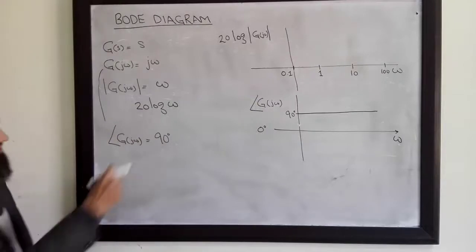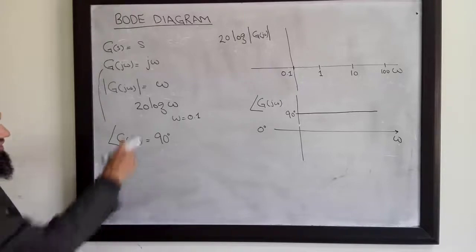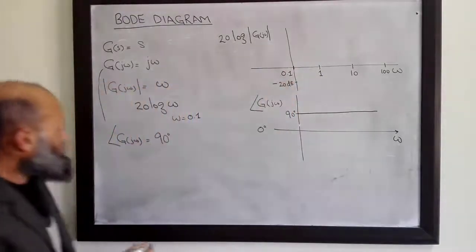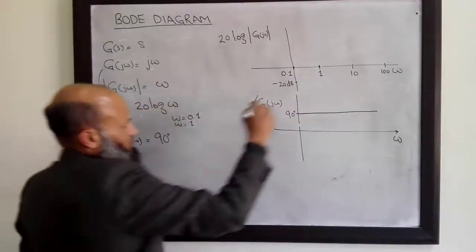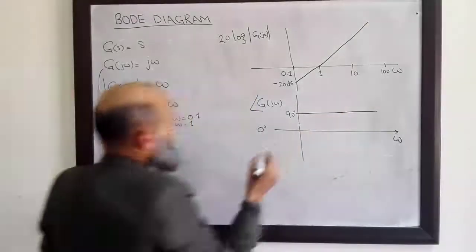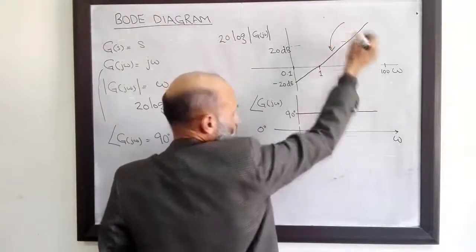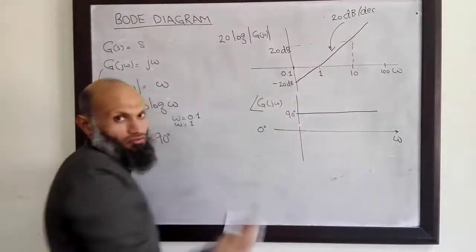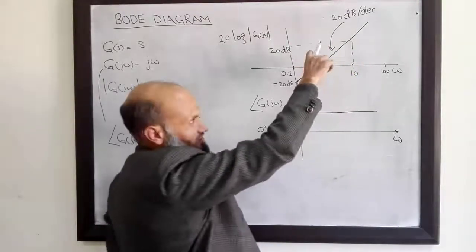How to sketch this? For frequency ω = 0.1, log(0.1) is −1 and multiplied by 20 gives −20 dB. For frequency equal to 1, log(1) is 0. So the magnitude plot for this transfer function is given by a straight line. Here −20 dB is at 0.1 and 20 dB at 10. The slope of this line is 20 dB per decade. The frequency from 0.1 up to 1 is one decade, and similarly from 1 up to 10 is one decade, with a rise in magnitude of 20 dB per decade.